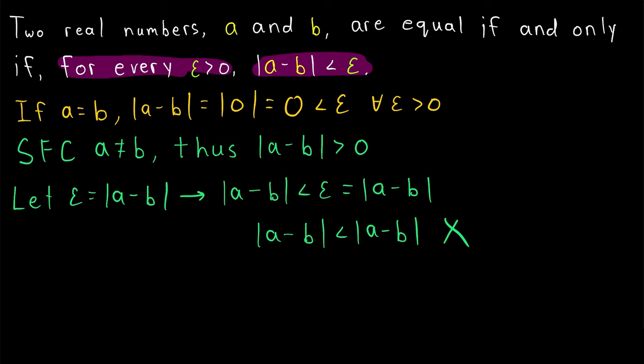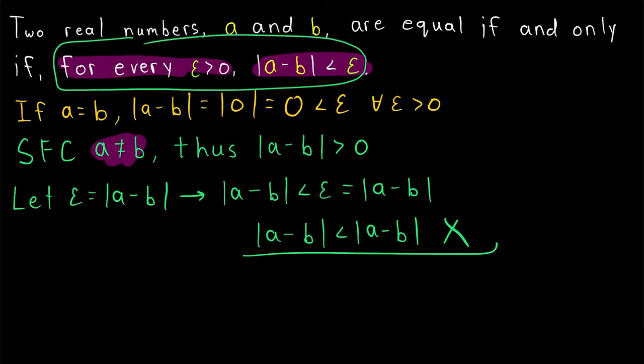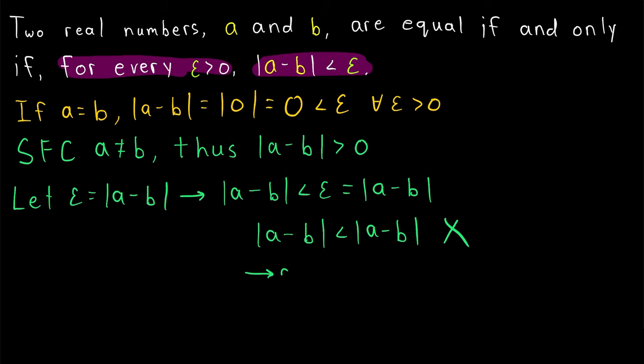One more time: we assume that for every epsilon greater than zero, the absolute value of a minus b is less than epsilon. We suppose, for the sake of contradiction, that a and b are not in fact equal. Thus, the absolute value of a minus b is greater than zero, and so we can use it as an epsilon value. And then our hypothesis implies this contradiction. Thus, from assuming that a and b are not equal under this condition, we get a contradiction. So in fact, a and b must be equal. And that completes the second part of the proof.